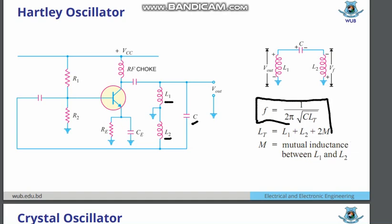That is the tank circuit oscillation. The tank circuit frequency is F equals 1 by 2π times root over C times LT, where LT is the total inductor.